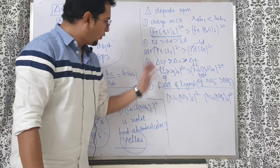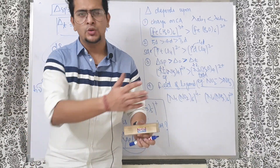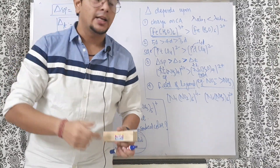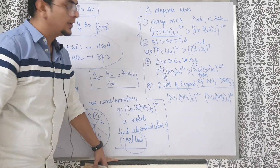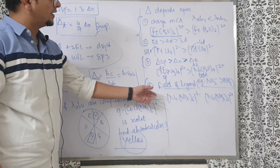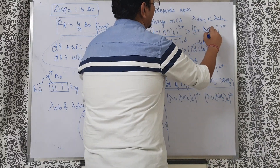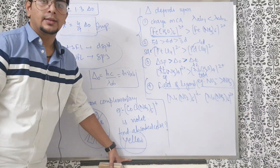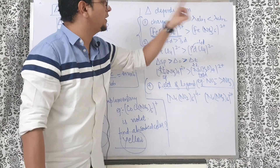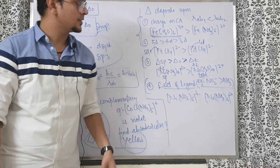The key in chemistry is knowing which factor to apply and when. Factors one (charge) and two (d-series: 5d/4d/3d) are equally important. Only check factor three (geometry) if one and two are the same. Only check factor four (field of ligand) if the first three all match. Do not check the field of ligand if the charge is different — charge will determine the answer, even if one complex has a strong field ligand like NH3.